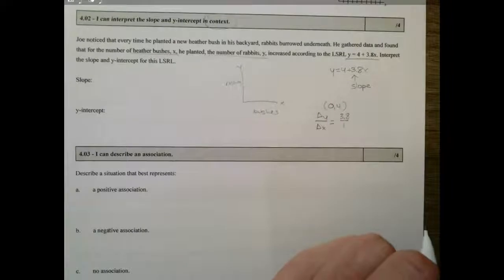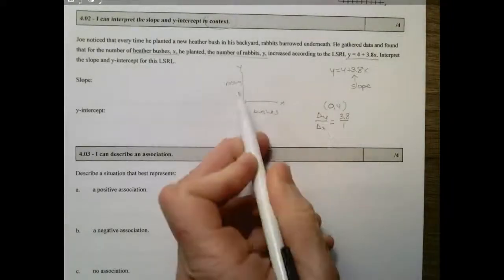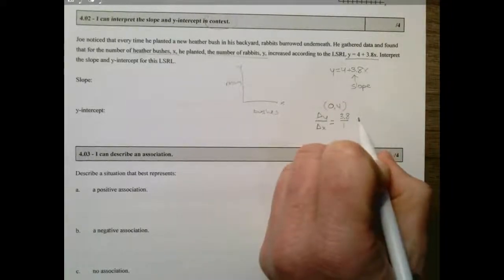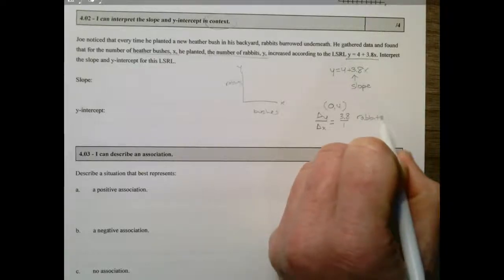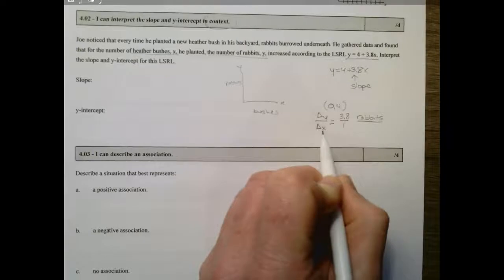The change in y is the number of rabbits, so rabbits per – the change in x is bushes.